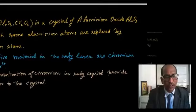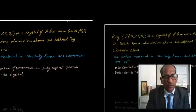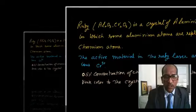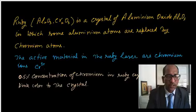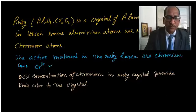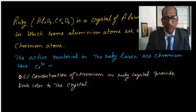Ruby crystal is aluminum oxide (Al2O3) in which some aluminum atoms are replaced by chromium atoms. This is the active material, chromium, and the concentration of chromium is 0.5%.